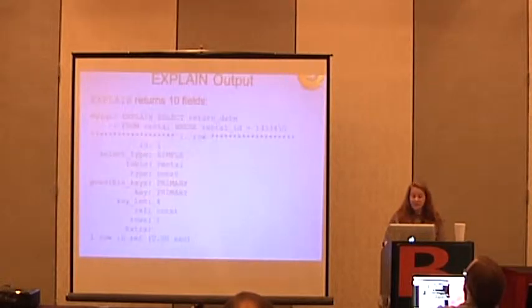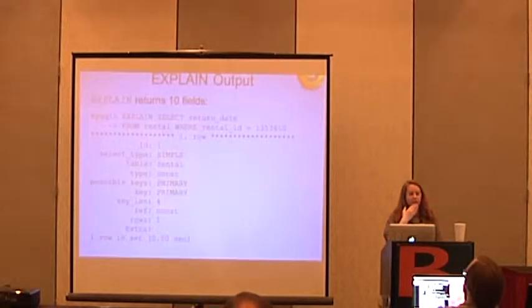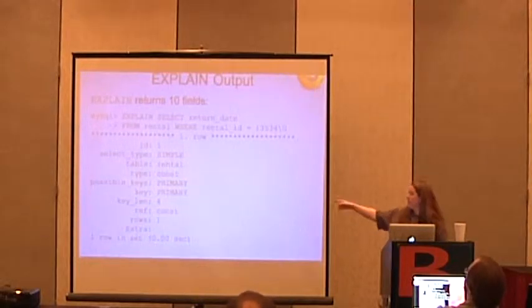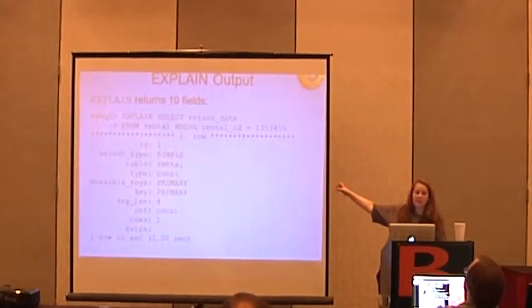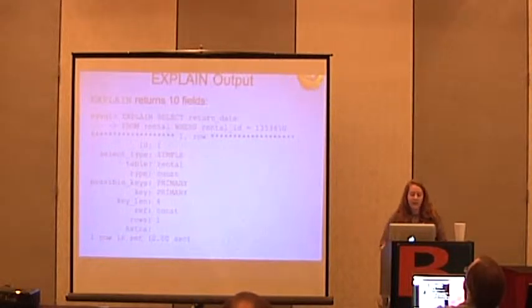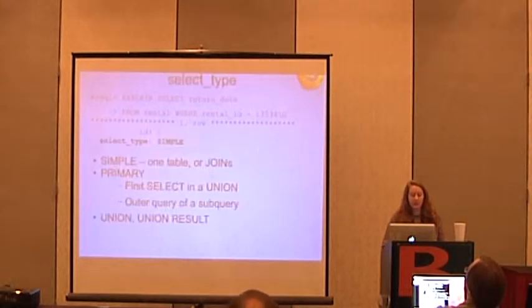This is what the output of EXPLAIN looks like. The first column is the ID — it starts with one, then goes to two, three, four, and so on. It's a sequential identifier. Then there's SELECT type, which we'll talk about.